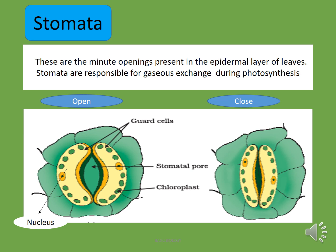Now there are two pictures — on one side there is open stomata and on the other side there is closed stomata. In both the stomata there are two guard cells which surround the stomatal pore, and each guard cell has one nucleus and many chloroplasts. Epidermal cells surround the guard cells.